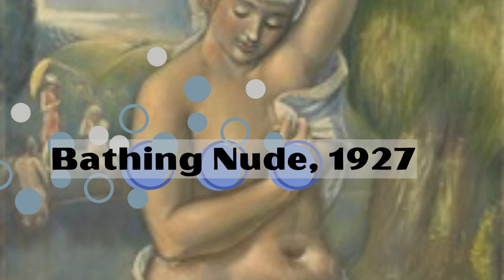While grounded in traditional techniques, Miller adopted modern approaches to color and form. His use of color was often expressive, and his brushwork displayed a willingness to experiment and incorporate contemporary trends without entirely abandoning his academic training.